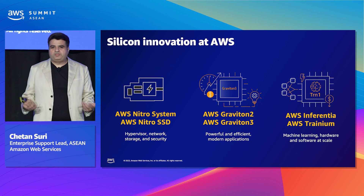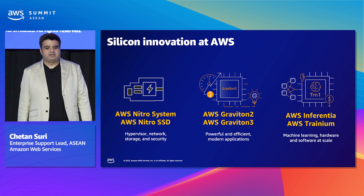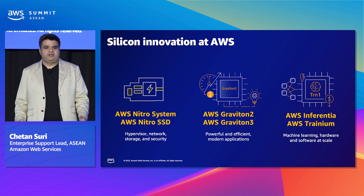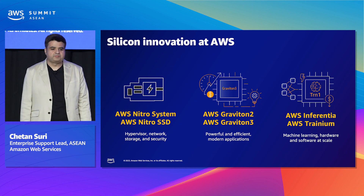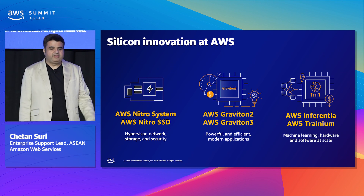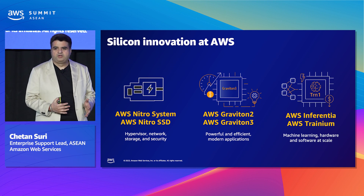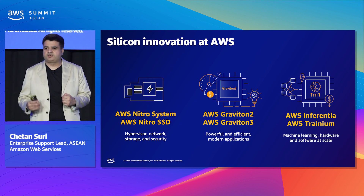Let's start with the silicon innovation at AWS. AWS invested years in designing custom silicon optimized for cloud workloads, which primarily gives three benefits: improved performance, lowered cost, and enhanced security. For example, Nitro Systems are the foundation for the modern compute infrastructure — a combination of dedicated hardware with a lightweight hypervisor to enable faster innovation and enhanced security.